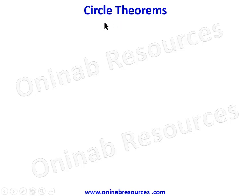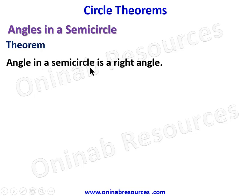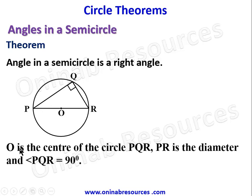Welcome back to this tutorial on circle theorems. In this video we'll be looking at theorems on angles in a semicircle. The statement of the theorem: angle in a semicircle is a right angle. Consider a circle with center O, where PR is the diameter and Q is a point on the circle. Angle PQR equals 90 degrees. This is the diagrammatical explanation of the theorem.